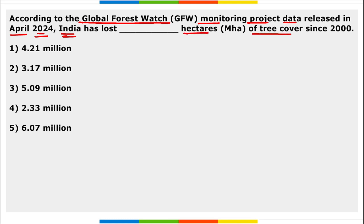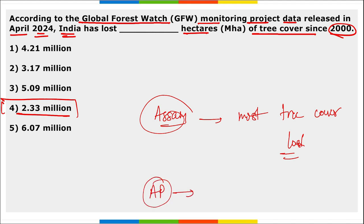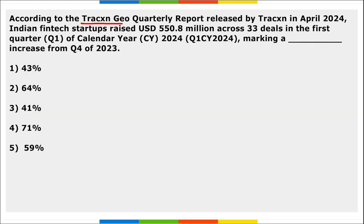According to the Global Forest Watch monitoring project data released in April 2024, India has lost 2.33 million hectares of tree cover since the year 2000. Assam saw the most tree cover area lost, while as of now Arunachal Pradesh currently has the most tree cover area — that is 6.11 million hectares.